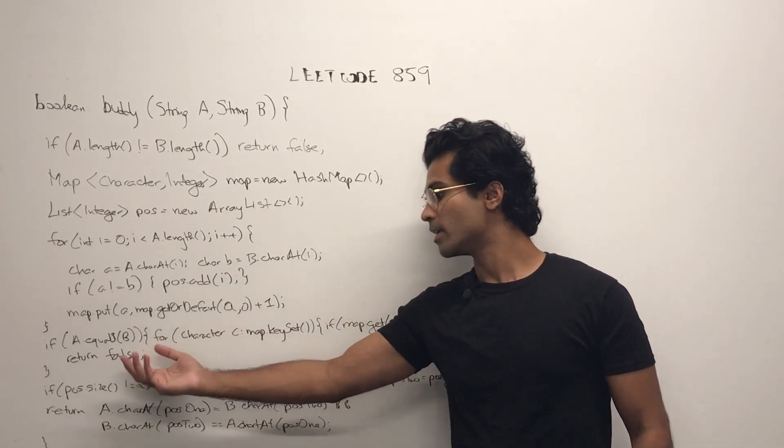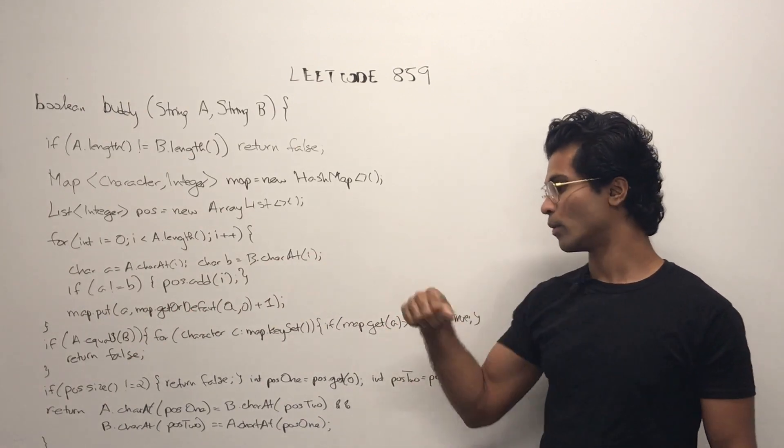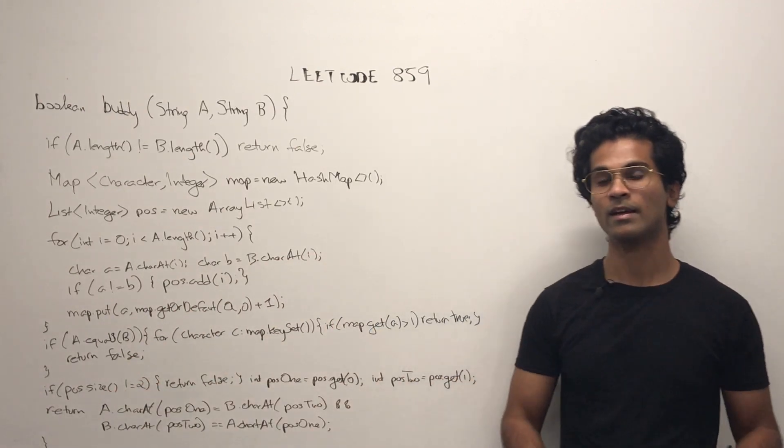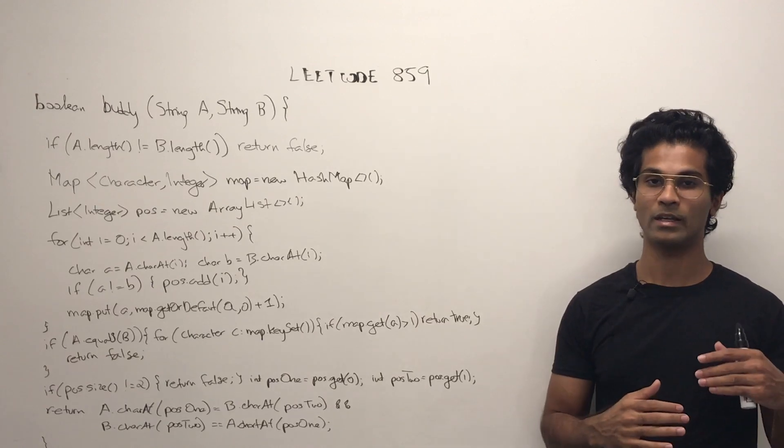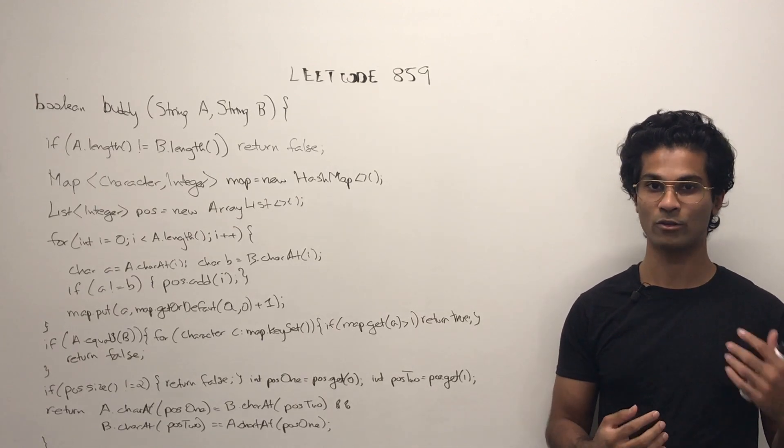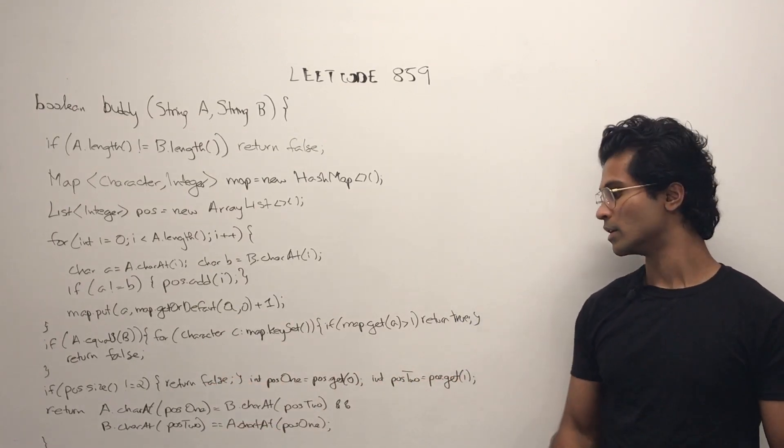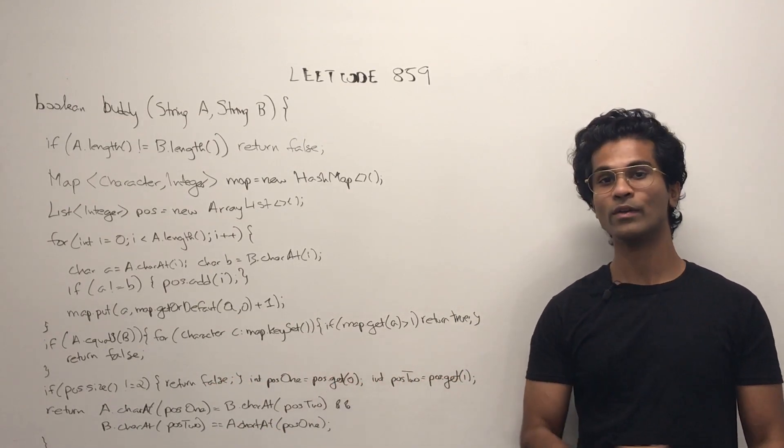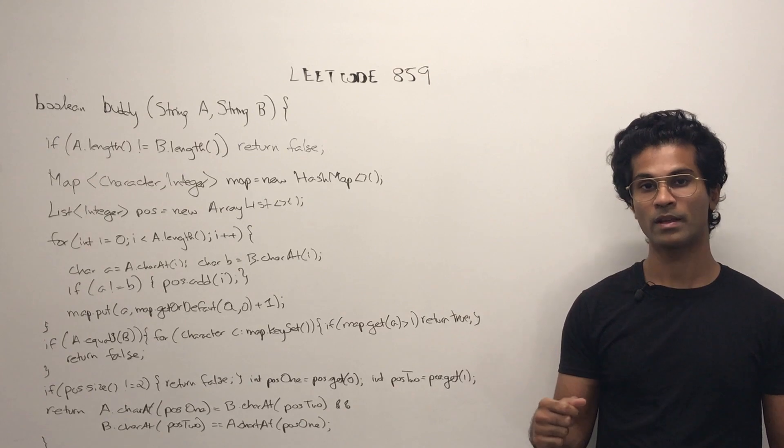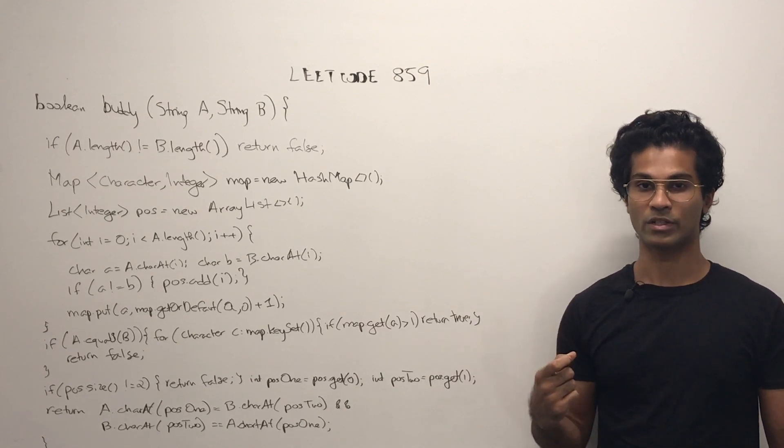Then if that doesn't work out either, what we do is we check the size of our list and if the strings differ in more than two spots then we're going to return false. Otherwise we're going to say okay we know that they differ in two spots, let's find out the positions.